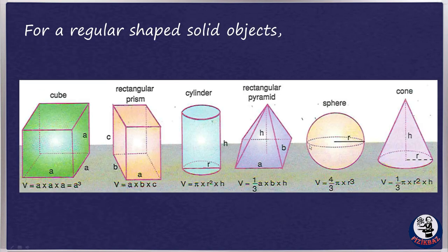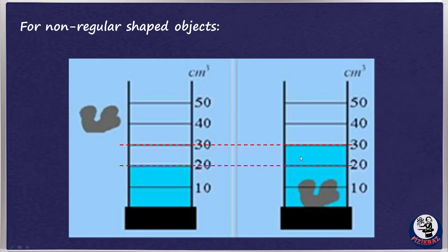For solids, there are two approaches to measuring volumes, depending on whether or not the shape is regular. For regular shaped solid objects, you can use mathematical formulas to calculate the volume. For non-regular shaped objects, we use a method called water displacement. Put the object in a measured amount of water and measure how much the water rises on a graduated cylinder. The difference is the volume of the object.